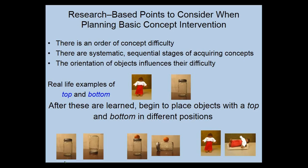There are systematic, sequential stages of acquiring many concepts, so a child might learn one member of a concept pair—such as 'big'—before 'little.' Part of the reason is that the positive member of a concept pair also describes the dimension being looked at. Additionally, when working with young children, adults tend to talk about things that are big or things that they want more of, rather than little or less—so this also influences acquisition and needs to be considered when planning intervention.